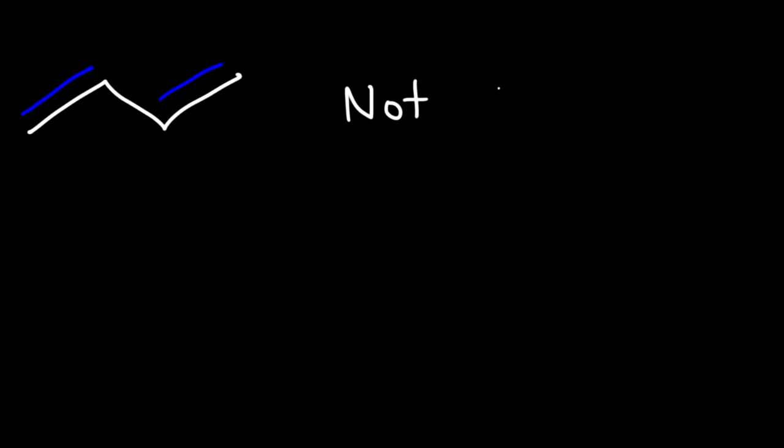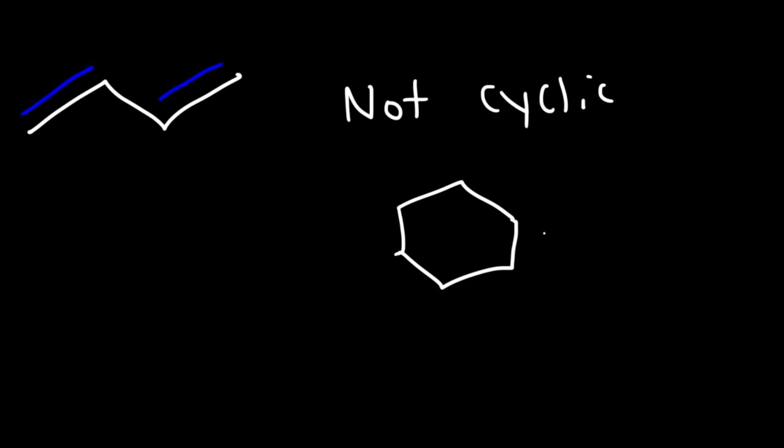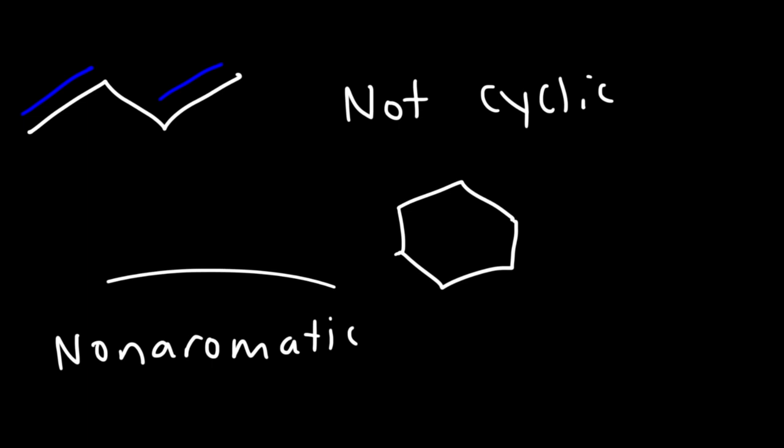What about 1,3-butadiene? Is it aromatic, anti-aromatic, or non-aromatic? This molecule is conjugated — a conjugated molecule has alternating double and single bonds, so here we have double bond, single bond, double bond. The only problem is that it's not cyclic; it's not in a ring. Because it's not cyclic, it can't be aromatic or anti-aromatic. Automatically, it's non-aromatic.